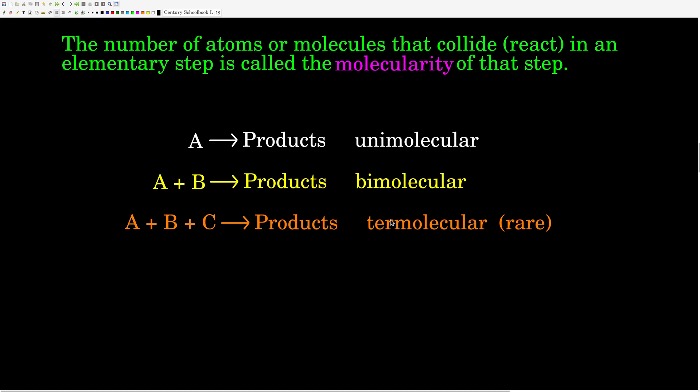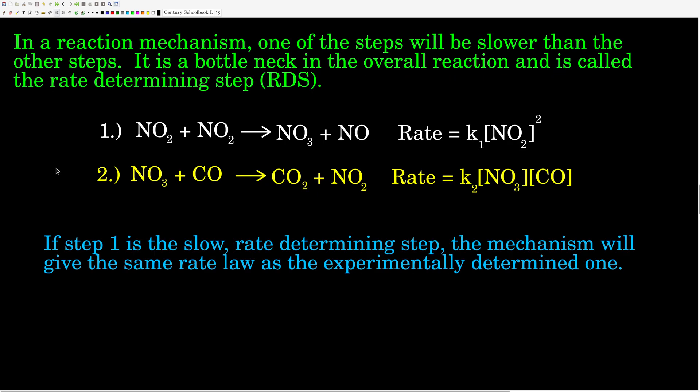So: unimolecular, bimolecular, termolecular. In a mechanism, when you write out the elementary steps, one of the steps is going to be slower than the others. This is a bottleneck for the overall process, because the elementary reactions happen sequentially — first, then second, then third. Whichever step is the slowest is the bottleneck, and the rate of that elementary step is what determines the rate of the overall reaction. That's what we call the rate-determining step.